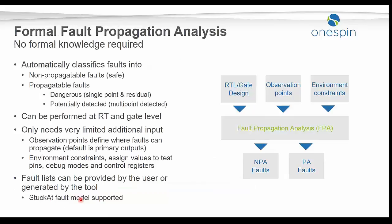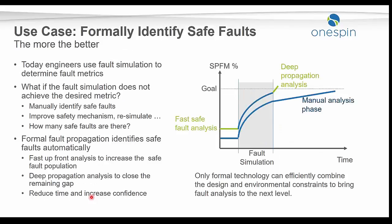What we developed at OneSpin is what we call a fault propagation analysis app. This tool allows you to classify faults into non-propagatable faults — which are the safe faults — and propagatable faults. We can perform this analysis on gate or RTL-level designs. The user provides the list of observation points and some environment constraints like debug-off. We support the stuck-at fault model: stuck-at-0 and stuck-at-1. Using this application, we can formally identify safe faults.